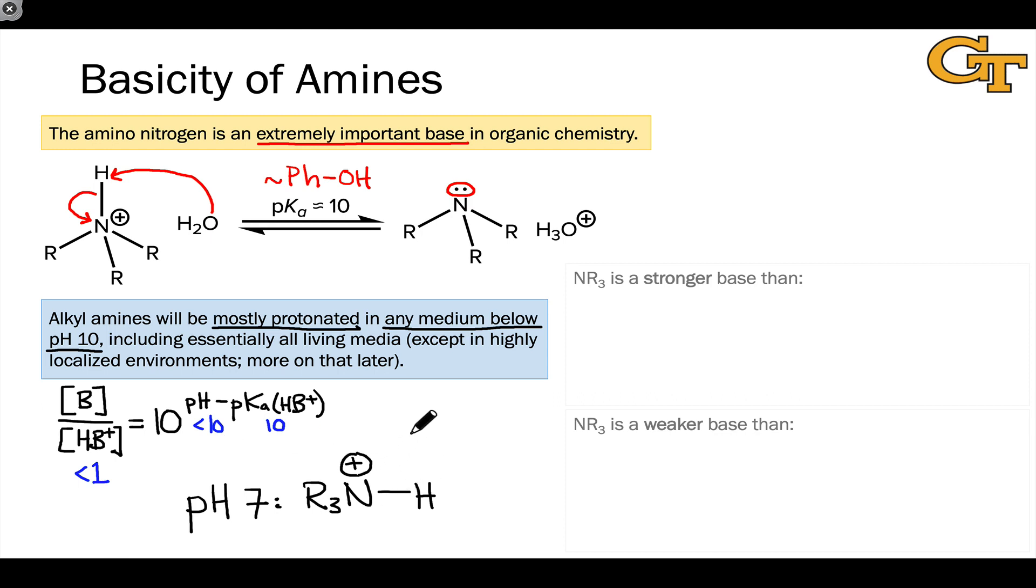And we'll actually talk about how biochemical systems achieve this, especially inside enzyme active sites, when we get to pKa modulation in a future lesson. But for the time being, it's worth keeping in mind that at pH 7, amines are mostly protonated.